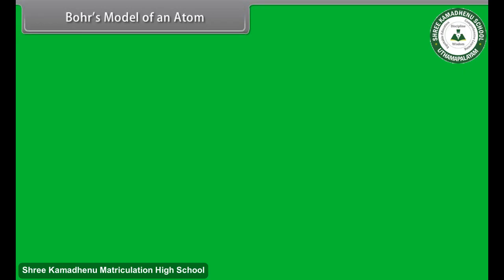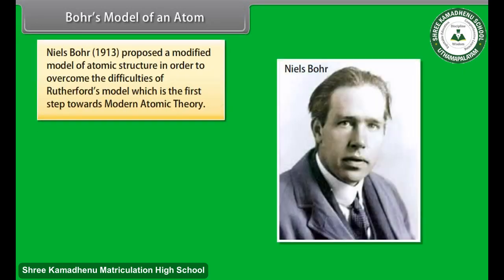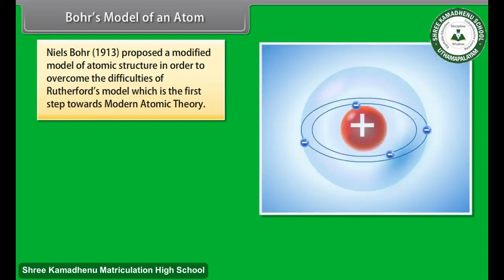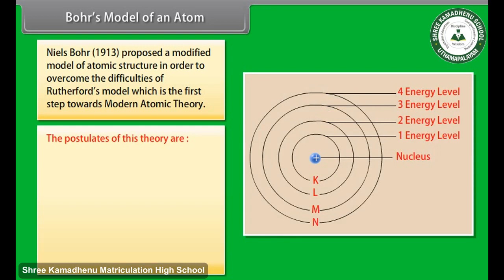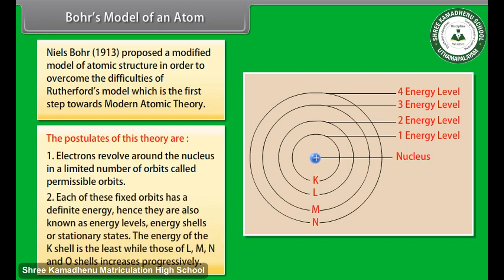Bohr's Model of an Atom. Niels Bohr, 1913, proposed a modified model of atomic structure in order to overcome the difficulties of Rutherford's model, which is the first step towards modern atomic theory. The postulates of this theory are: 1. Electrons revolve around the nucleus in a limited number of orbits called permissible orbits. 2. Each of these fixed orbits has a definite energy, hence, they are also known as energy levels, energy shells, or stationary states.